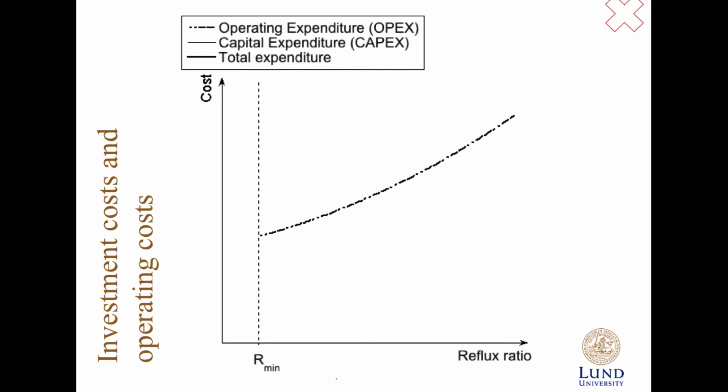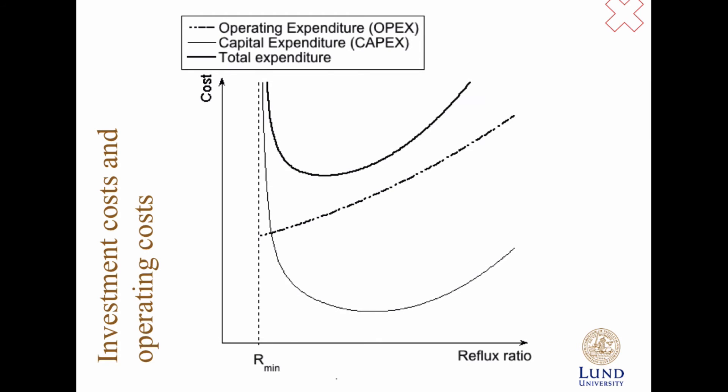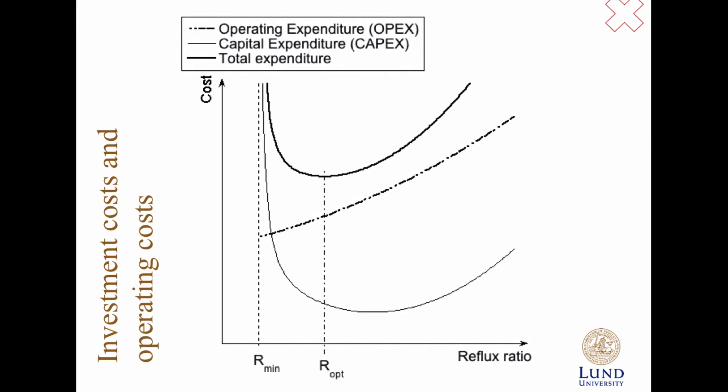But in the end, if the reflux ratio is infinite, if everything goes back, then we don't produce anything. So the higher we get, the larger, the wider the distillation column must be. So thus we get a curve that looks something like this. And if we combine the two, we get somewhere an optimum reflux ratio. So in our course, we have talked about the minimum reflux ratio, and we have talked about the minimum number of trays you need. But there is also an optimum reflux ratio, but that has to do with money, and we won't do any such calculations.